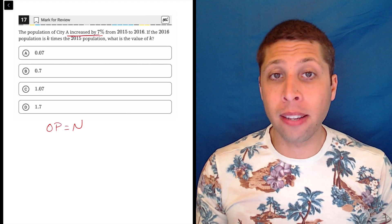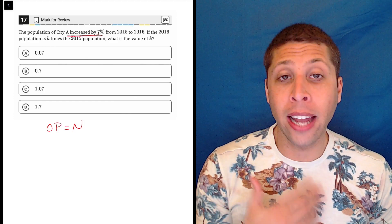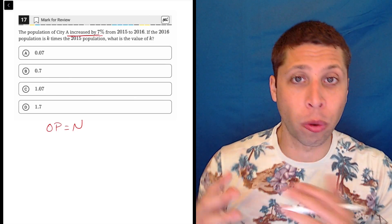We have the O stands for the original, the P is the percentage as a decimal, and the N is the new. So those three letters together tell me how to work with a percentage.